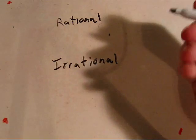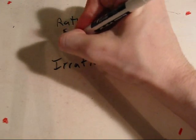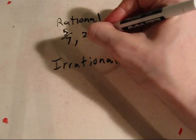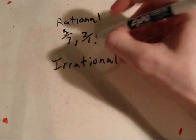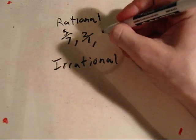Rational numbers include things like 5 7ths, 2, 2 and 1⁄2.